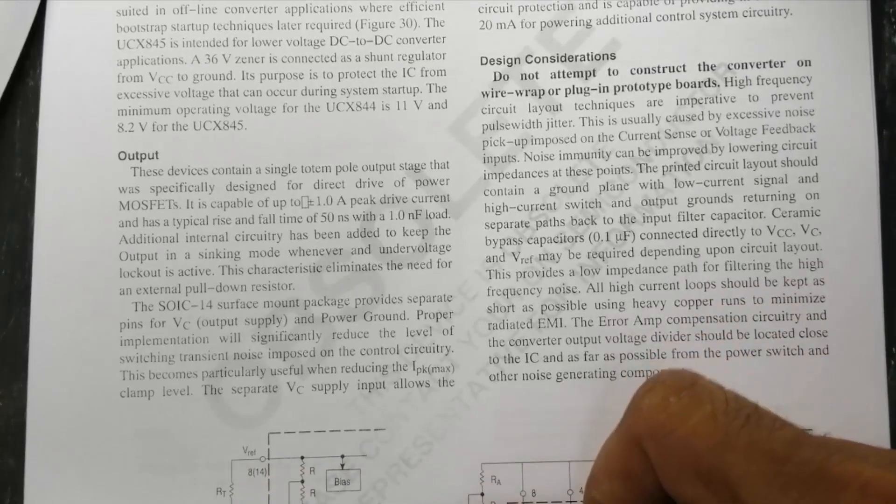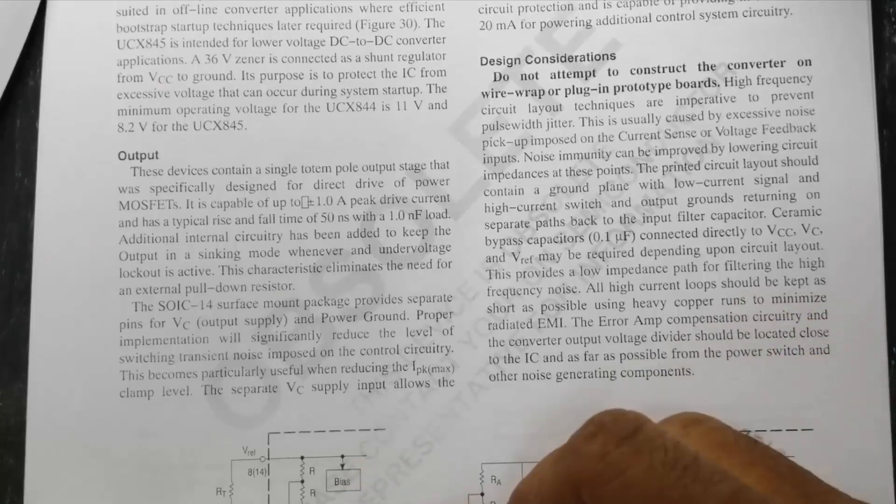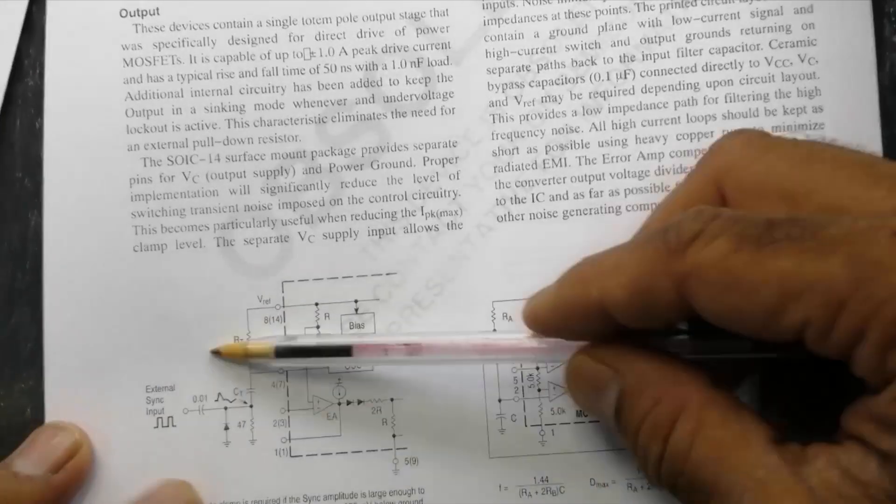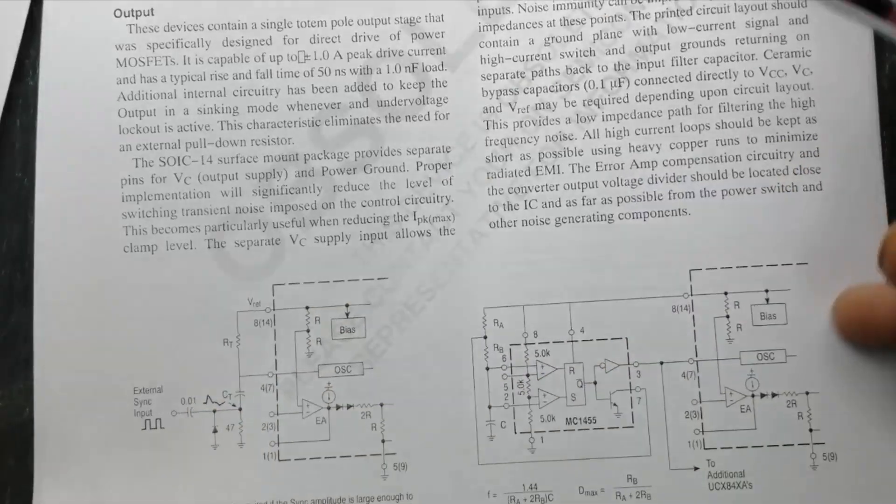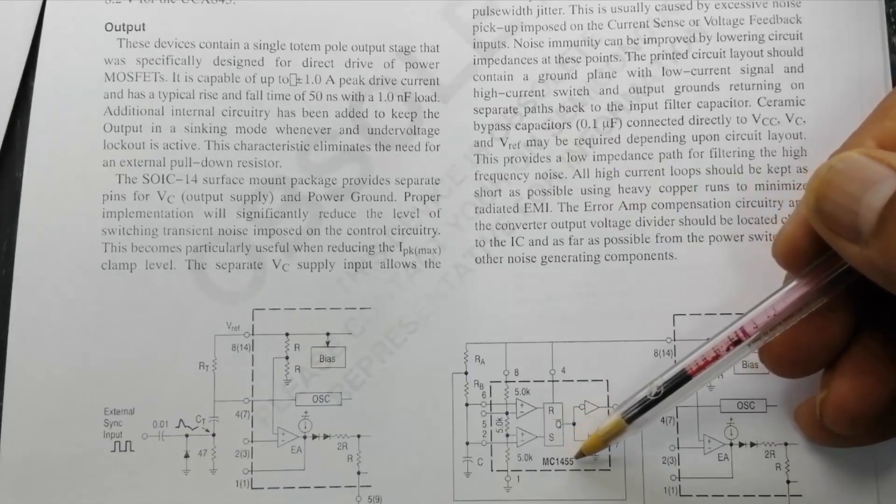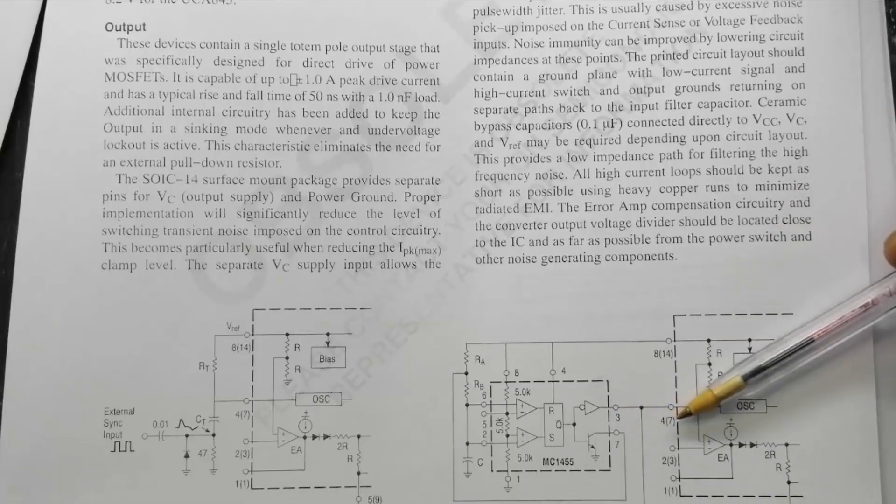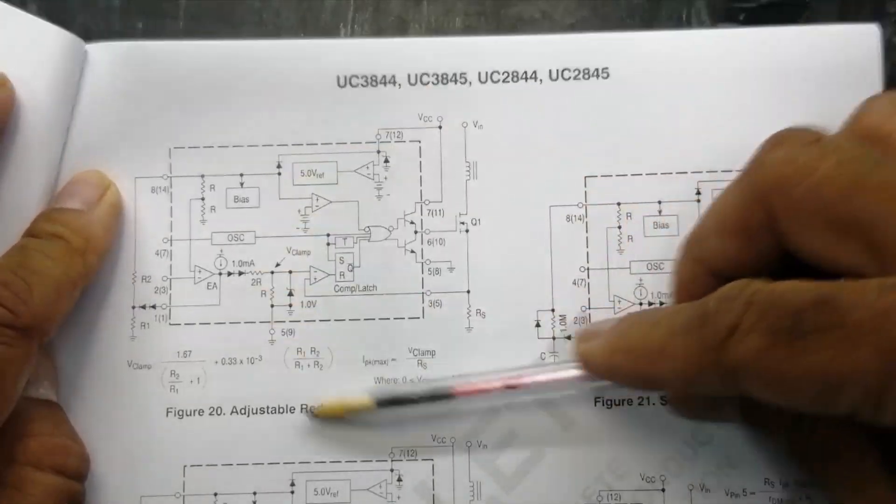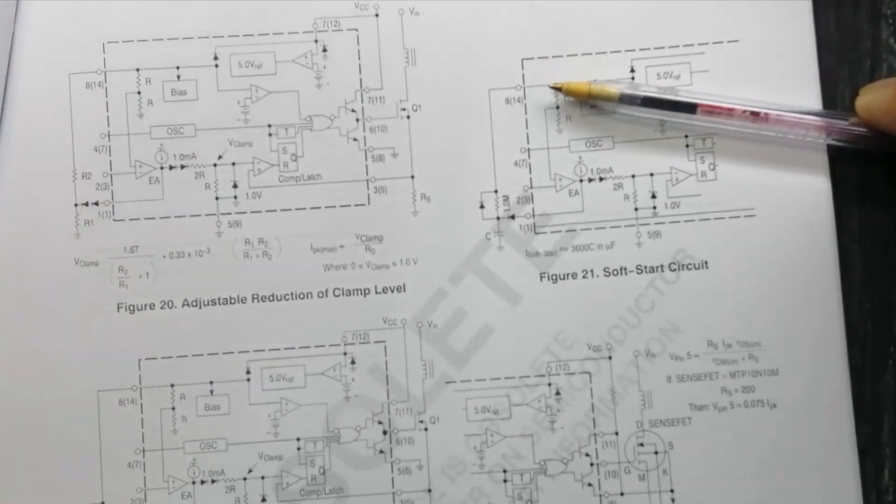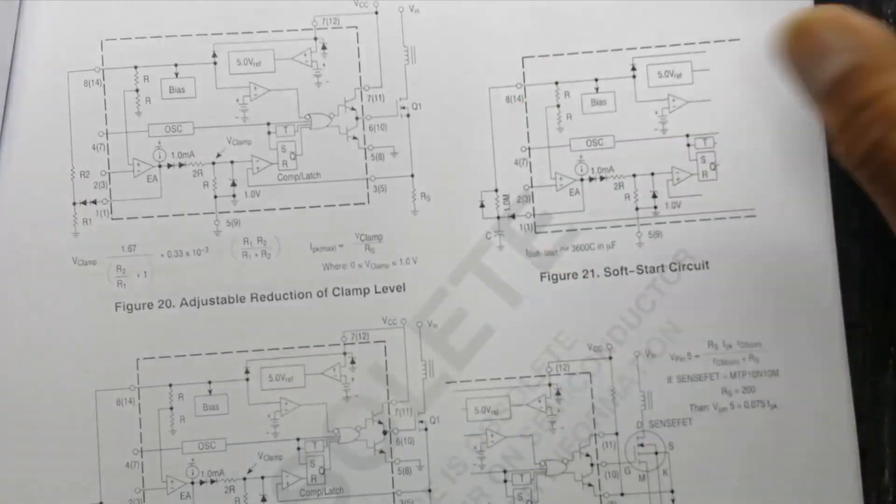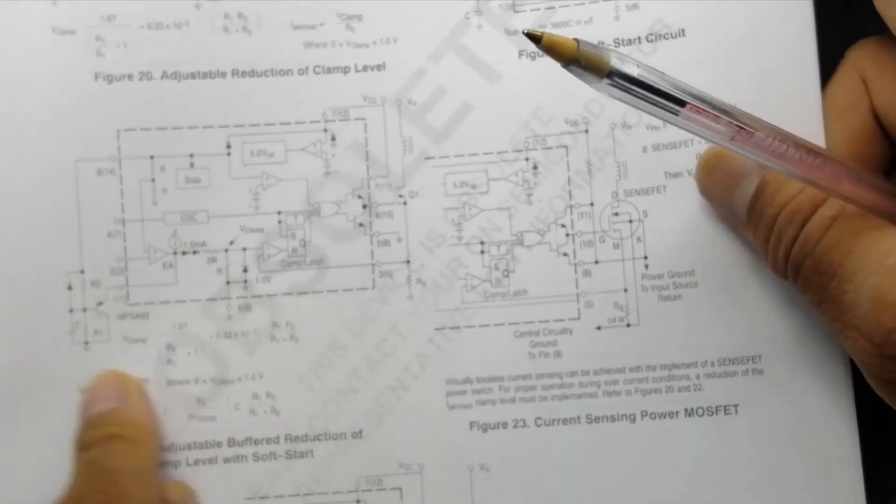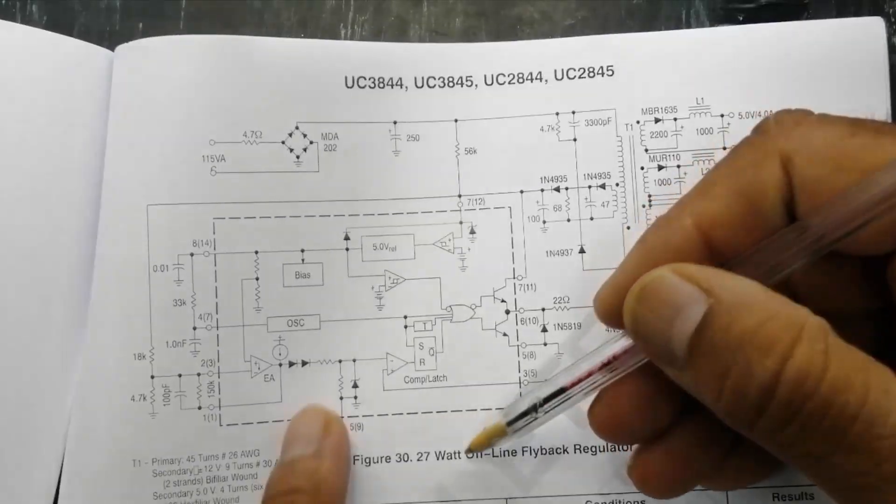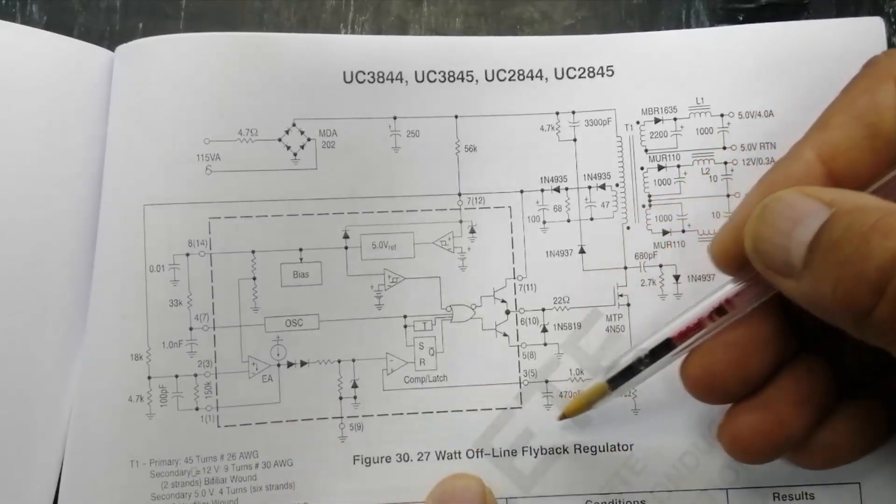How it works, RT and CT. If you give an external sink, we can apply it in this condition. We can use MC1455 IC to give external sink. Different design samples, templates are available here. And how we can use an external clamp. All calculations are available here in this datasheet. In this datasheet, 27 watt offline flyback regulator.